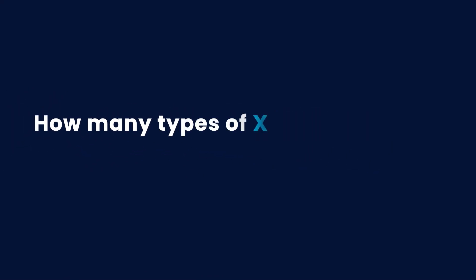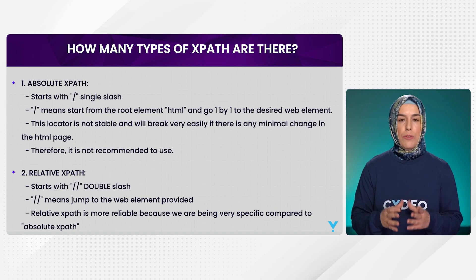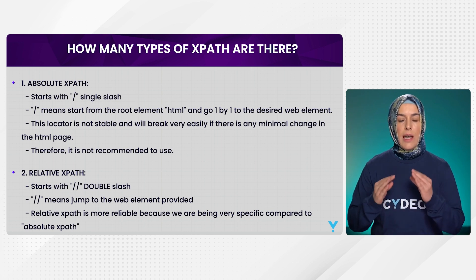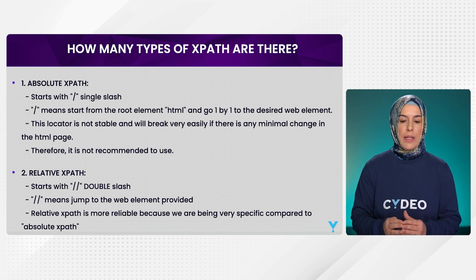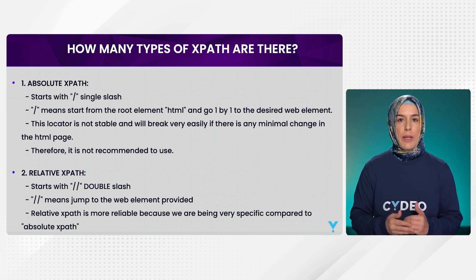How many types of XPath are there? There are two types of XPath: the one is absolute XPath, and the other one is relative XPath.